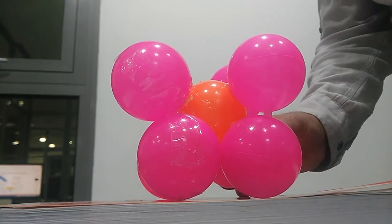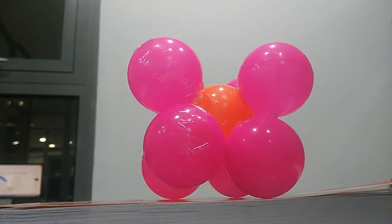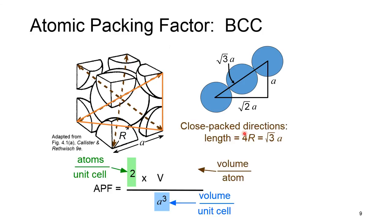So we have the relation 4R = √3·A. The APF is the volume of 2 atoms — one central atom and eight one-eighth corner atoms — divided by the volume of the unit cell. You can substitute the R and A relation to complete the rest of the APF calculation for BCC.